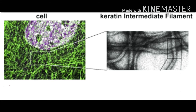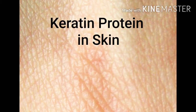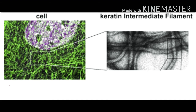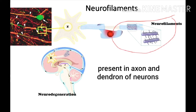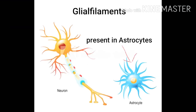The first type is keratin filaments. The word keratin comes from keratin protein, and this keratin protein is present in skin, so keratin intermediate filaments are present in skin. The second type of intermediate filament is neurofilaments. These neurofilaments are found in axons and dendrons of nerve cells. Neurons, or nerve cells, are part of the nervous system, and in the axons and dendrons of these nerve cells, intermediate filaments called neurofilaments are present.